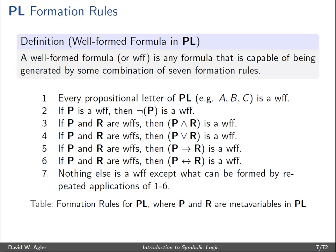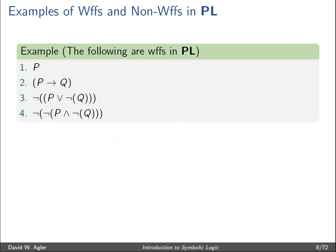The final rule indicates that rules one through six are all there are — there are no hidden or additional rules that will form well-formed formulas. All well-formed formulas in the language of propositional logic can be formed by these six rules. So let's look at a couple examples of WOOFs and non-WOOFs in the language of propositional logic.